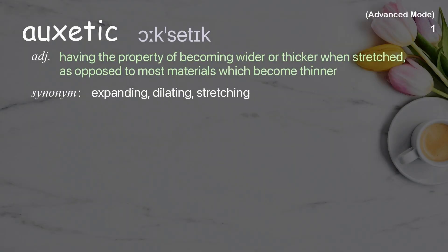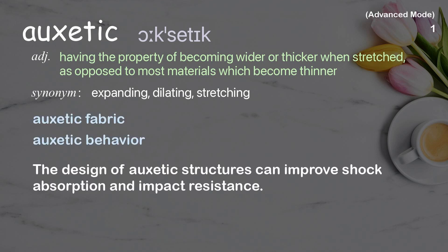Auxetic. Having the property of becoming wider or thicker when stretched, as opposed to most materials which become thinner. Examples: Auxetic fabric. Auxetic behavior. The design of auxetic structures can improve shock absorption and impact resistance.